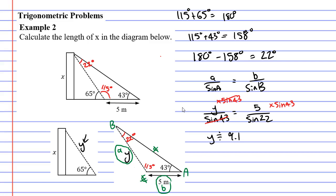Now we don't like to round yet — we haven't found the final solution — but we'll leave the solution in the calculator. It's approximately 9.1 metres. That means y is approximately 9.1 metres. So let's now focus on the triangle at left. This is a right angle triangle, which means we're going to use our SOH-CAH-TOA method here.